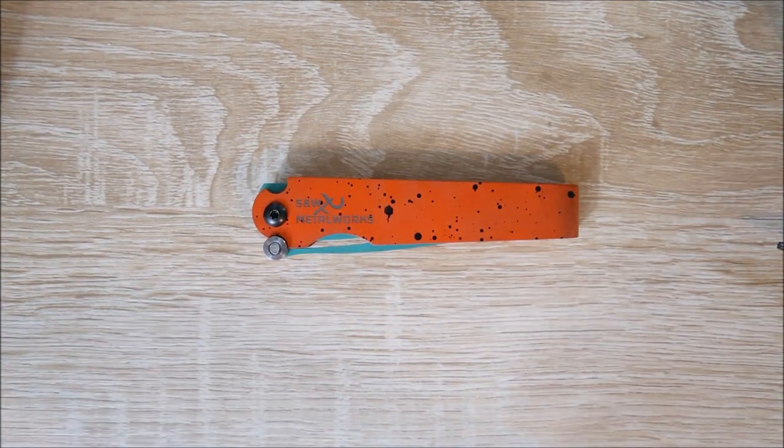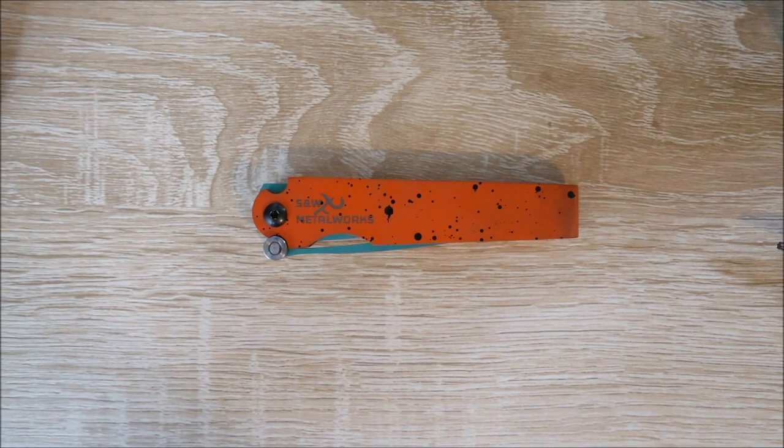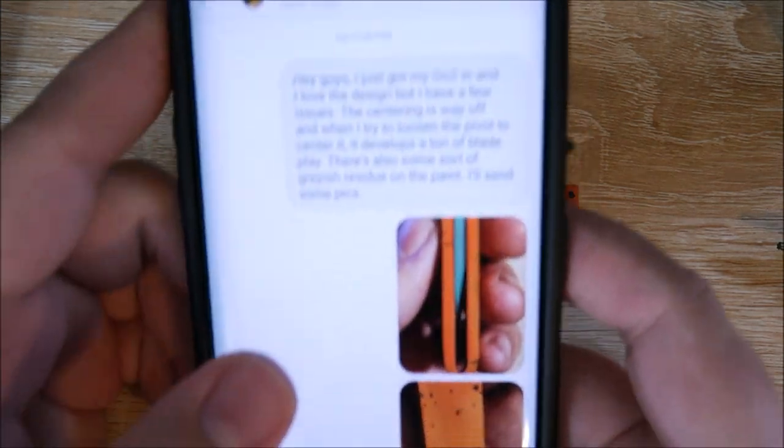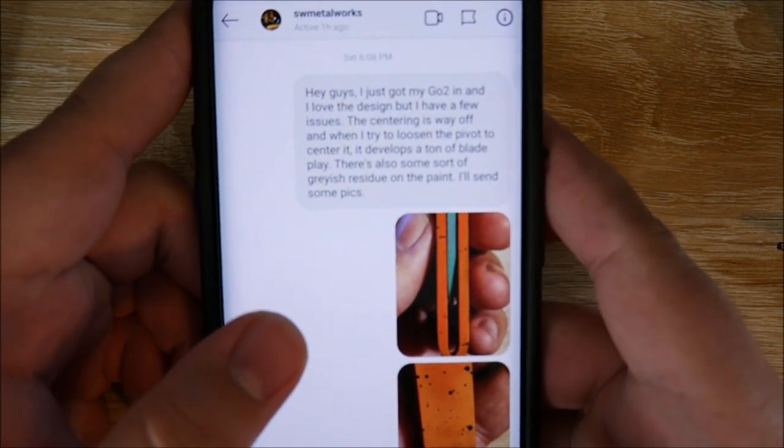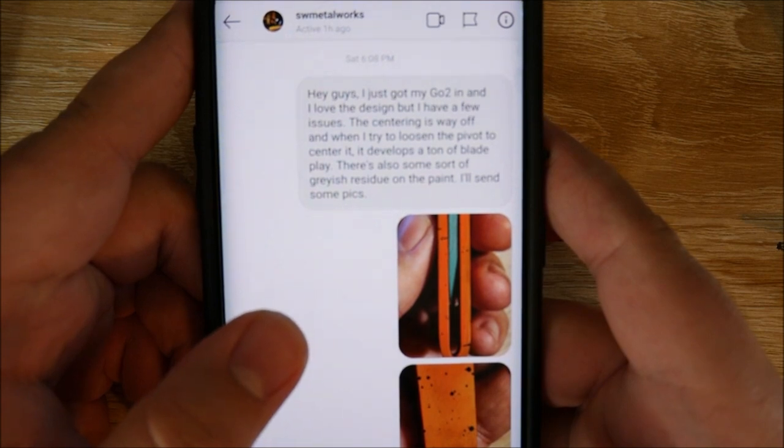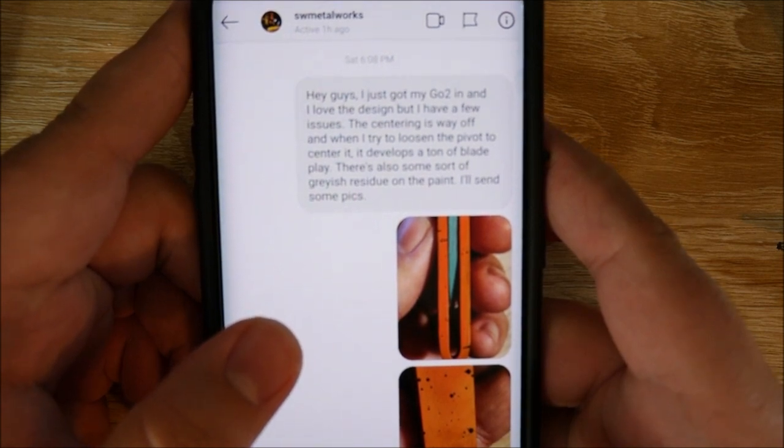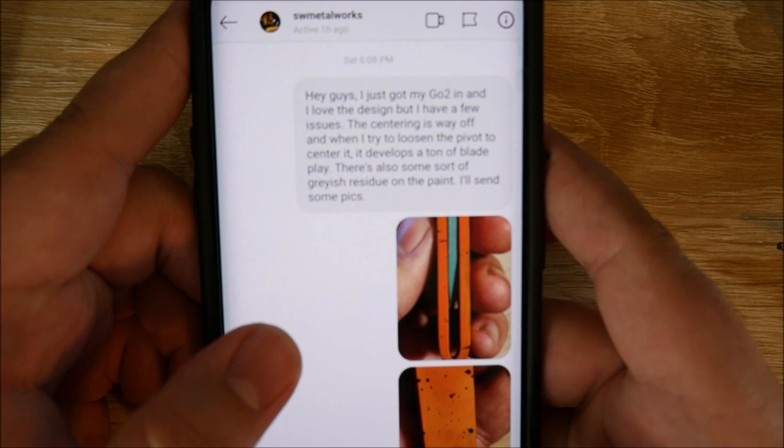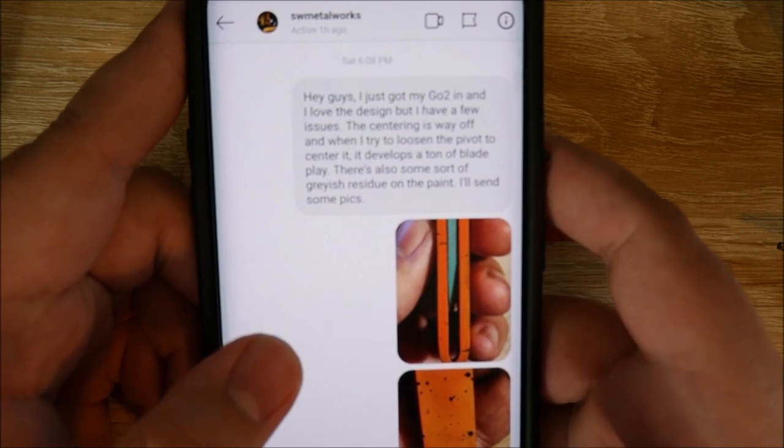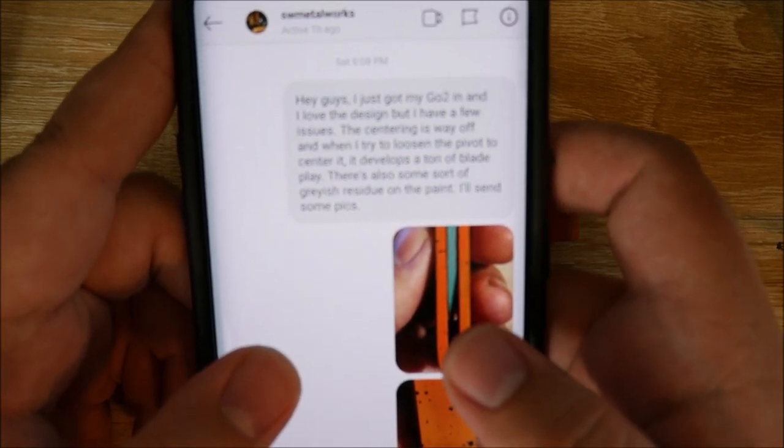So, what I did was, I reached out to the company. You know, I wanted to give them a chance. They seem like good guys, so I went ahead and reached out to them. So, I said, Hey guys, just got my go-to in, and I love the design, but I have a few issues. The centering is way off, and when I try to loosen the pivot to center it, it develops a ton of blade play. There's also some sort of grayish residue on the paint. I'll send some pics.